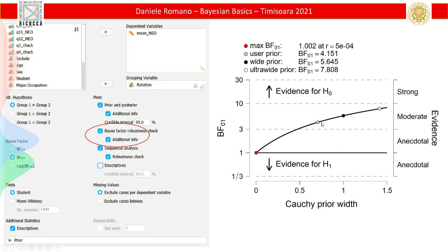You can change the prior — there's a prior section where you can change it. Now they've implemented more options because people asked for it. You have the default Cauchy with scale 0.707, but also normal and T distributions. You can change and put whatever distribution you want. For example, I changed to Cauchy with scale 0.5 — you see how it affects the results and changes the Bayes factor. But again, it doesn't change the final decision unless you provide very strange or strong priors.